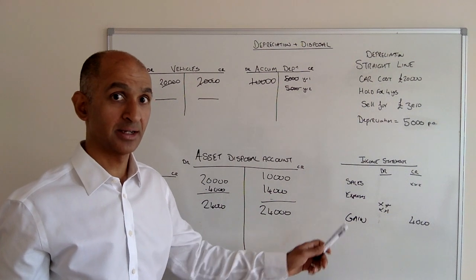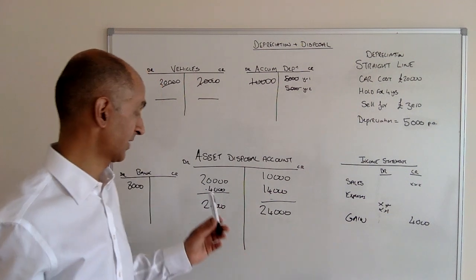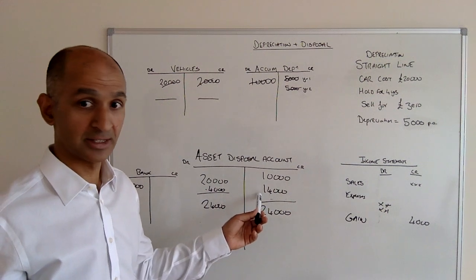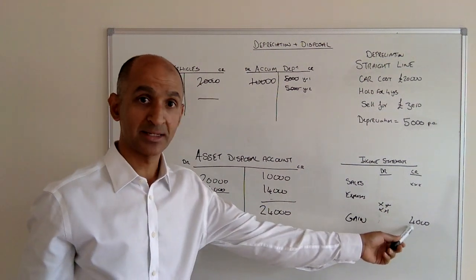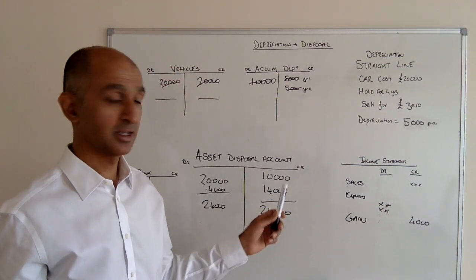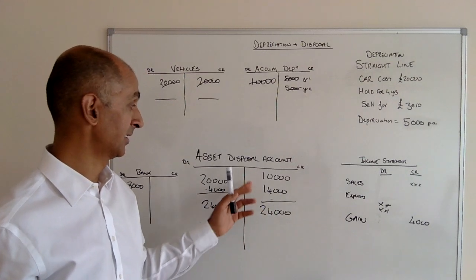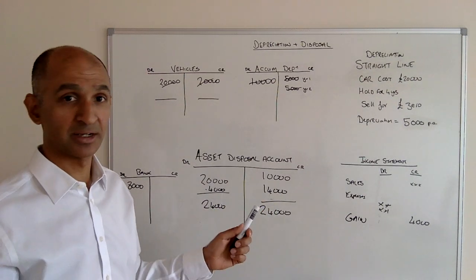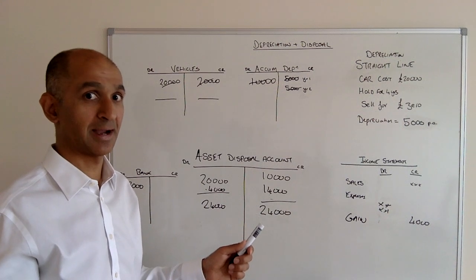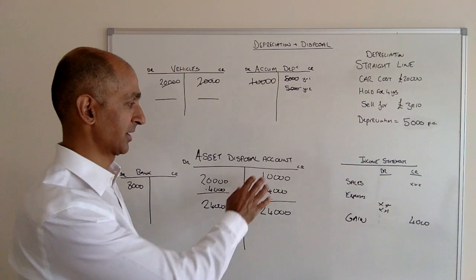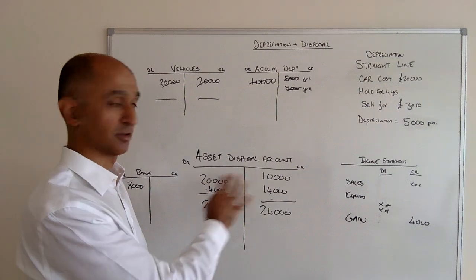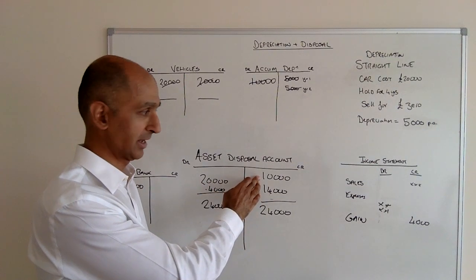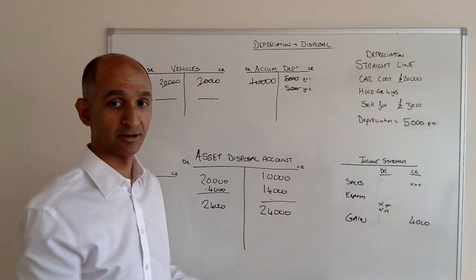But again, it's not a cash figure; it's a gain on sale. The cash figures were the £20,000 that went out at the start and the £14,000 that came back in. This is a balancing figure because our depreciation in reality should have been £4,000 less than it was. If we had calculated depreciation correctly at the start, this would have been a figure of £6,000 and £14,000, which would have made £20,000, but we didn't. We over-expensed in the first two years, so now we have a gain here of £4,000.